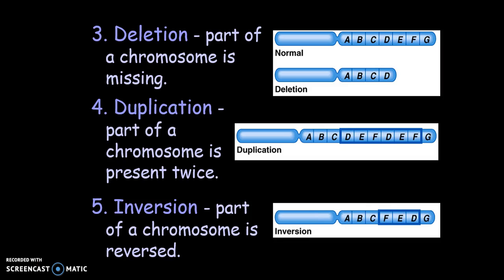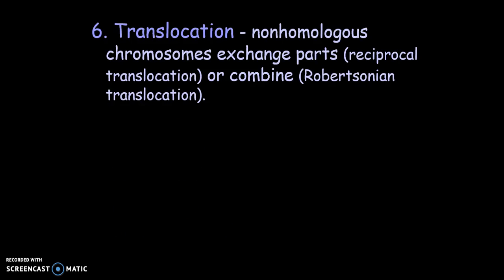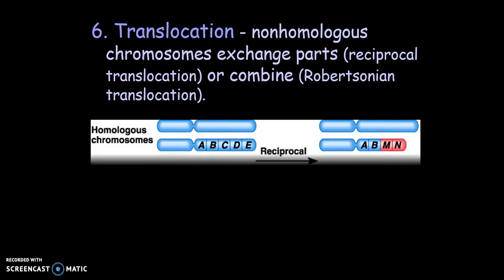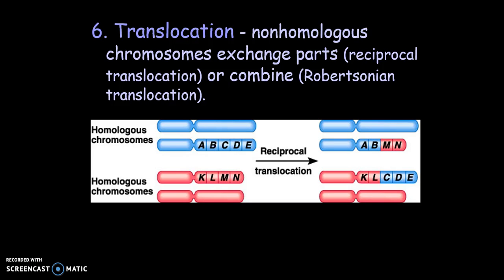Inversion is when part of a chromosome is reversed — the chromosome breaks in two places and the segment becomes reinserted in reverse order, which can result in malignant tumors. The last abnormality is translocation, where non-homologous chromosomes exchange parts or combine. This occurs when all or a piece of a chromosome becomes attached to a non-homolog, and a lot of this can increase the rate of cancer. We are now done with our different types of genetic problems. Go to the PowerPoint that shows you how to do the problems next, and if you have any questions, just let me know.